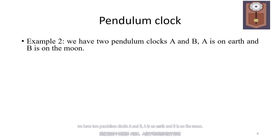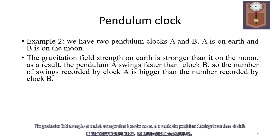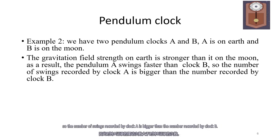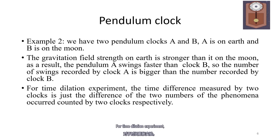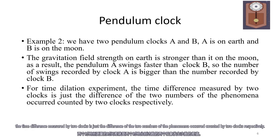This is the pendulum clock. For two pendulum clocks A and B, where A is on a planet with stronger gravity and B is on a planet with normal gravity, the gravitational field strength of the stronger planet is greater. As a result, pendulum A swings faster than clock B. So the number of swings recorded by clock A is bigger than the number recorded by clock B. For a time dilation experiment, the time difference recorded by two clocks is just the difference in the two numbers of phenomena counted by the two clocks respectively.